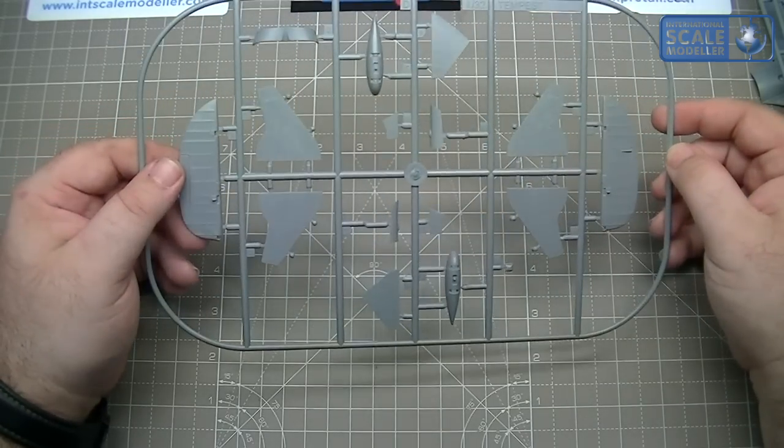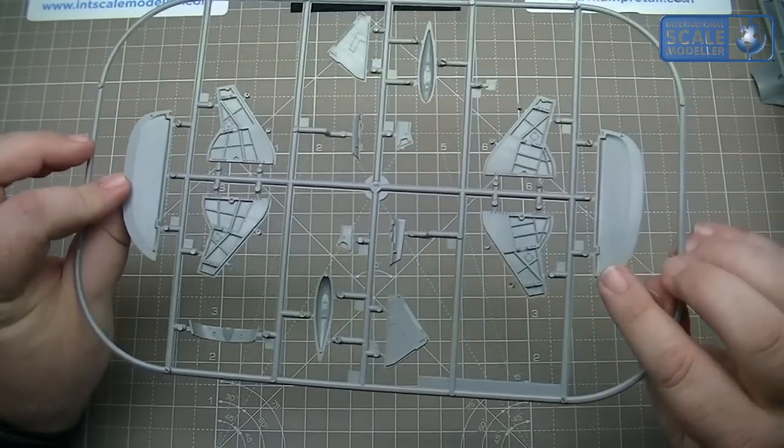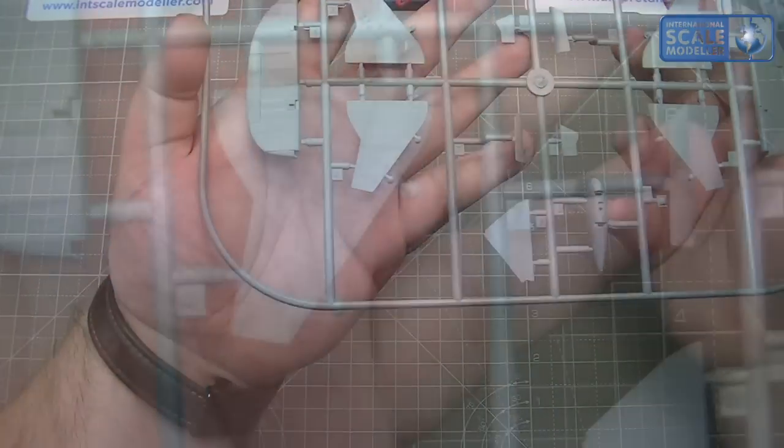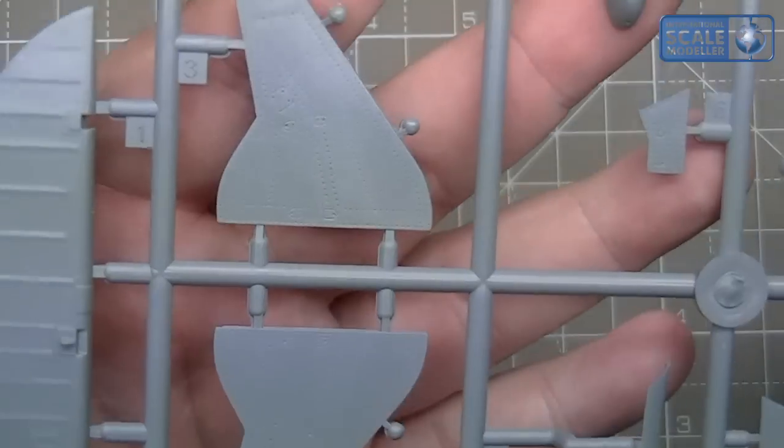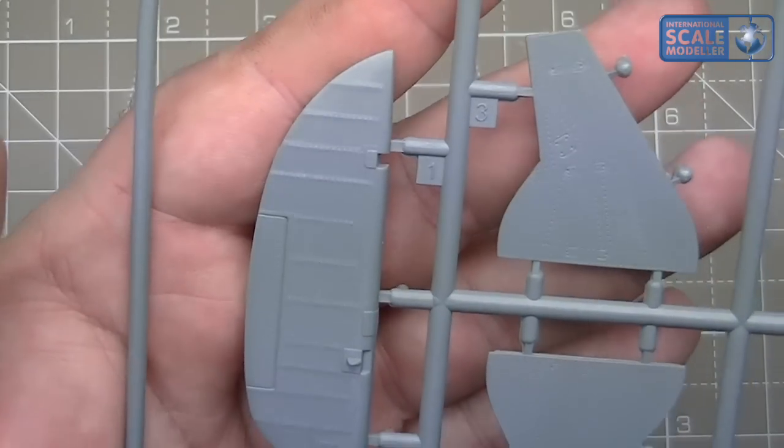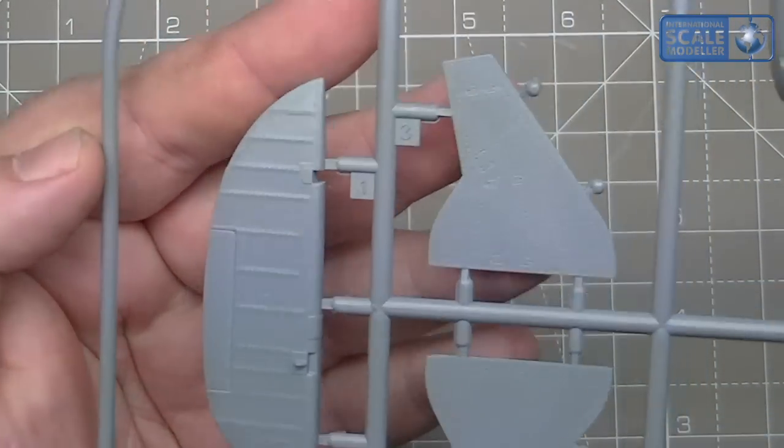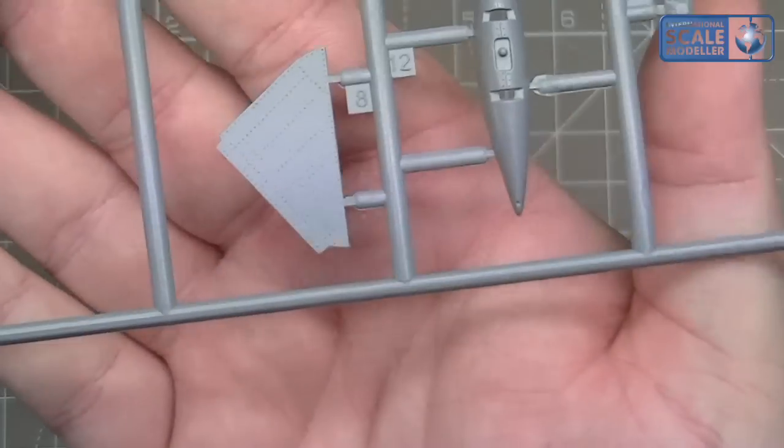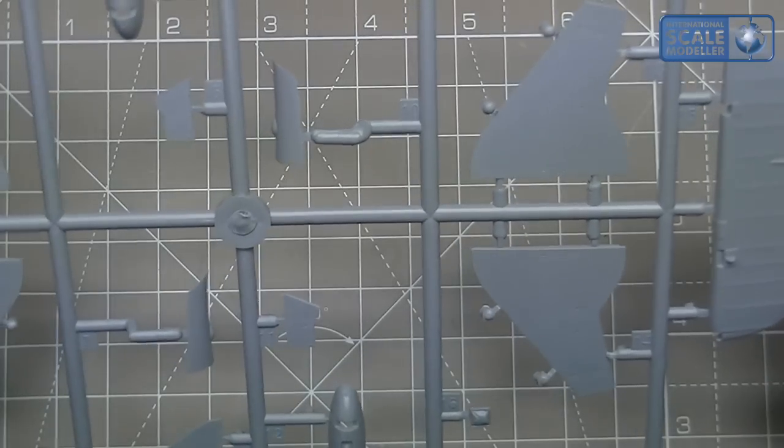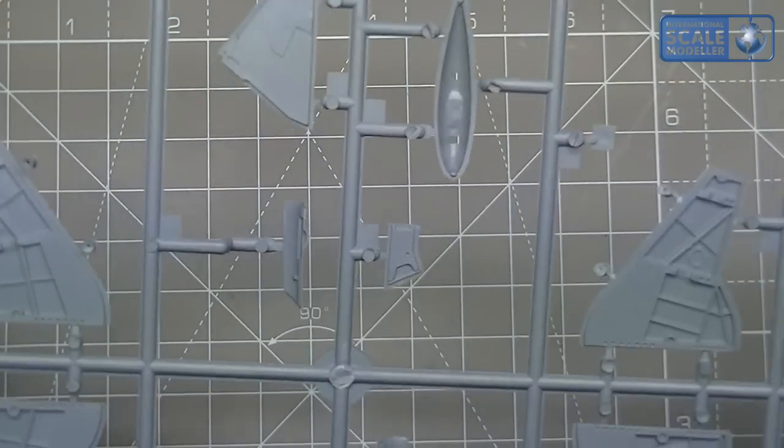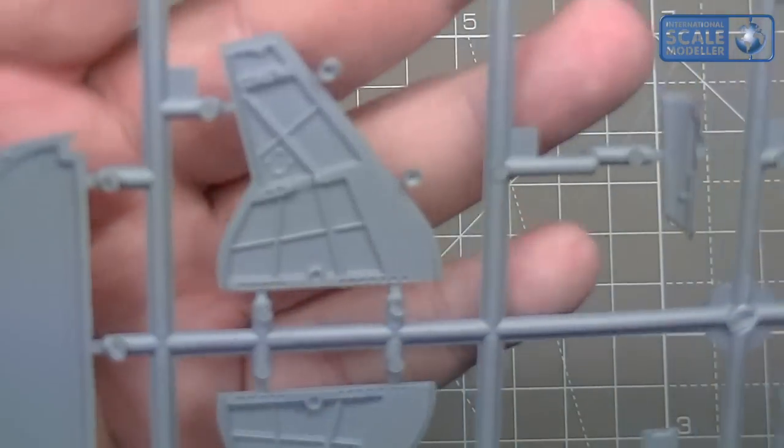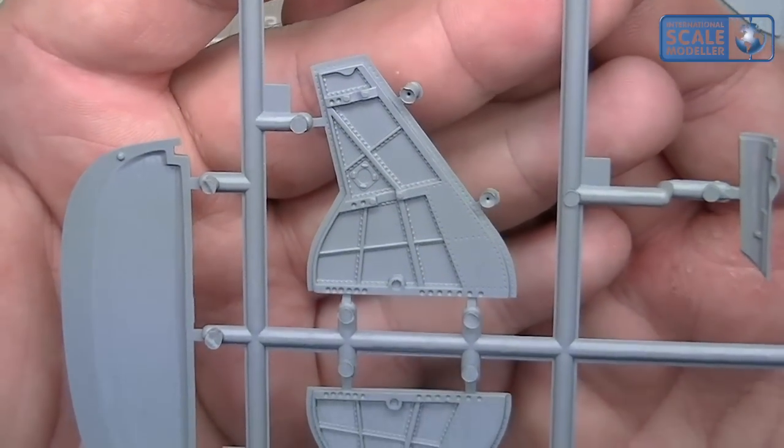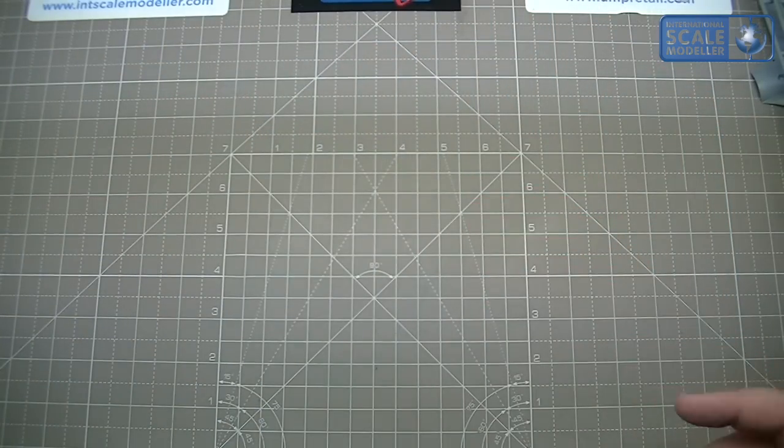Next part, we've got control surfaces - the rudder, rudder in half, the landing gear covers. Again, beautifully riveted. Really, really nice. We've got the fabric detail on the rudder which again is really good, really crisply done. Everything that needs rivets is very nicely depicted.